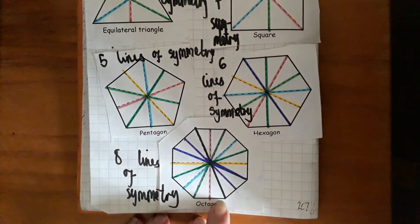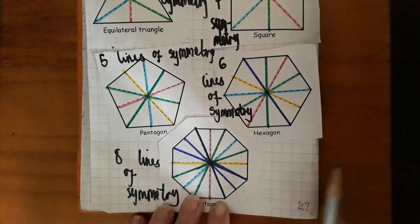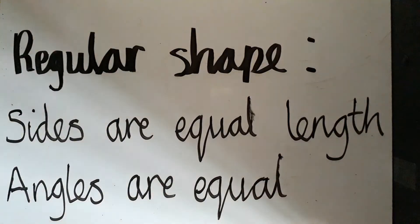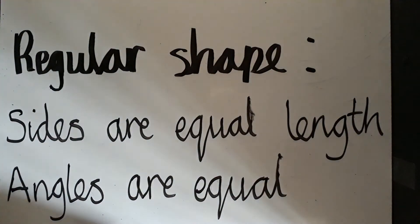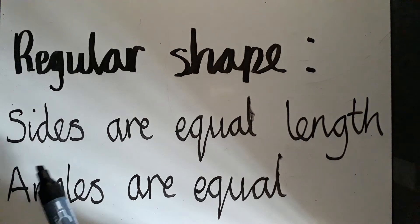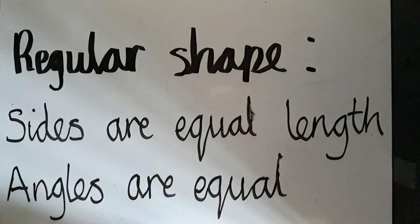And if you annotate that, just to remind yourself that a regular shape means that the sides are equal length, okay, and the angles are equal as well.